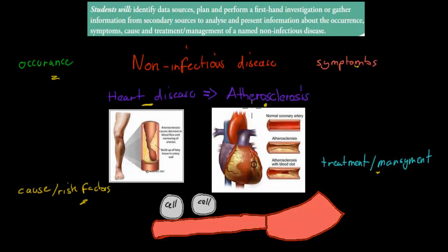The reason why I say more specifically this type of heart disease is because heart disease refers to any part of the heart itself not working properly, and atherosclerosis is one example of when the heart doesn't function properly. What it is, it's actually a stiffening of the blood vessels, and the lumen — the inside of the blood vessels — becomes more and more narrow.